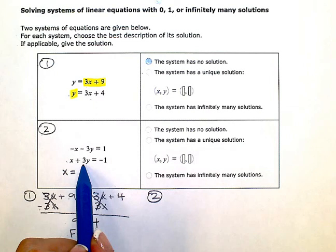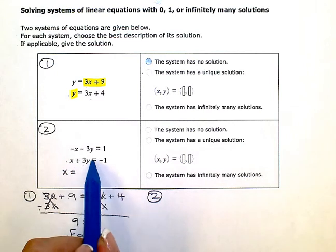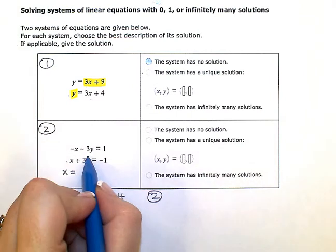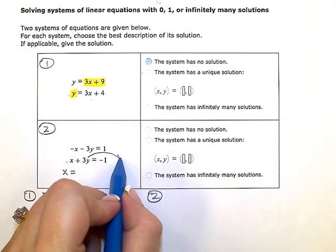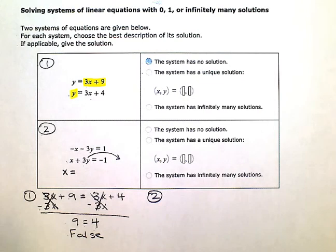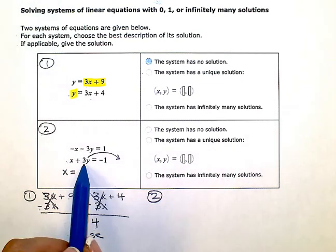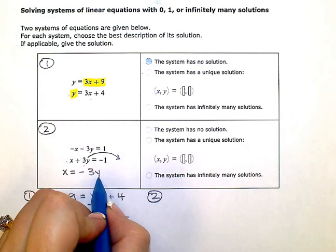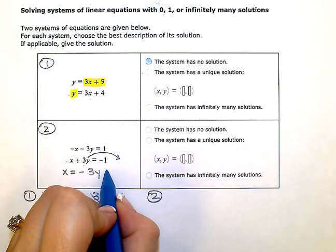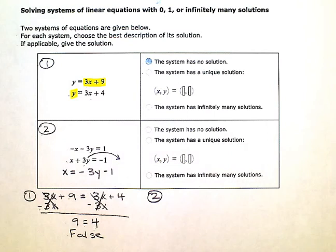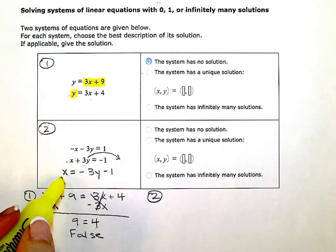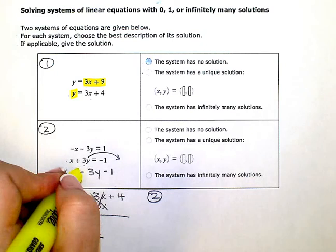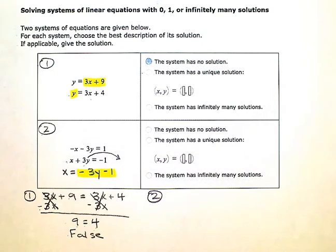Because the only thing I need to do is get rid of this plus 3y. So you're going to subtract 3y from each side. Or as a little mental shortcut, you can imagine that 3y just jumping over the equals to the right side. When it jumps over the equals, it goes from being positive 3y on the left to being negative 3y on the right. And then I also have this negative 1 on the right. So now instead of x, I can replace x with the expression negative 3y minus 1.